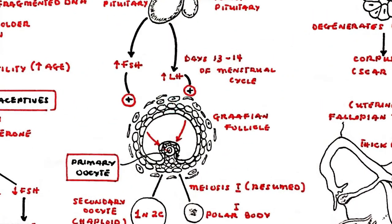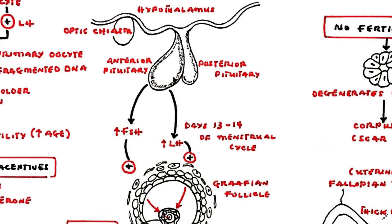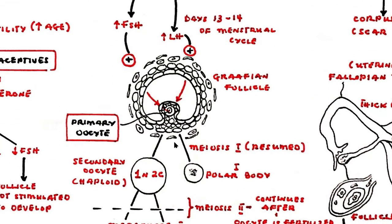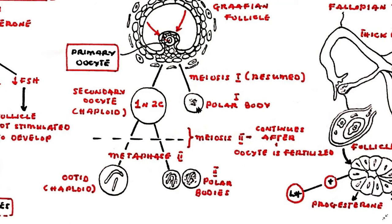The primary oocyte of the Graafian follicle responds to surges in follicle stimulating hormone (FSH) and luteinizing hormone (LH), produced by the pituitary gland on days 13 and 14 of the menstrual cycle, by resuming meiosis 1 and continuing cell division. When the oocyte divides, it forms one large cell and one smaller remnant known as a polar body. At the end of meiosis 1, the oocyte has become a secondary oocyte. Polar bodies are small non-functional cells that receive very little cytoplasm and degenerate soon after division.